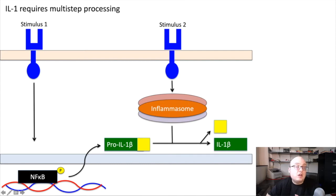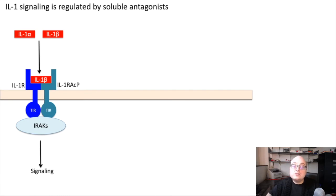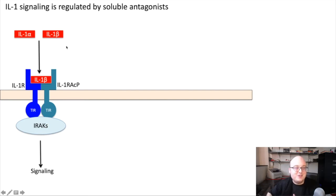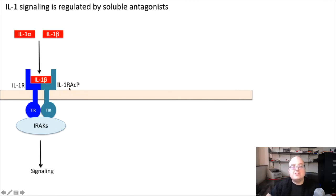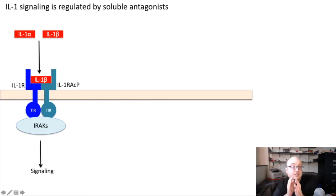That two-point checkpoint system is an important regulatory step — the inflammasome cleaves the inactive pro-form of IL-1 cytokines into their active forms. We can also produce our own soluble antagonist to IL-1 signaling. There are multiple IL-1 cytokines; IL-1α and IL-1β both share the same receptor, the IL-1 receptor. The IL-1 receptor, like most cytokine receptors, has two chains: the normal IL-1 receptor subunit as well as an IL-1 receptor accessory protein. Both chains need to come together to actually transmit a signal.